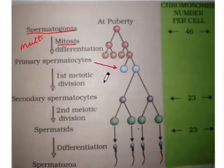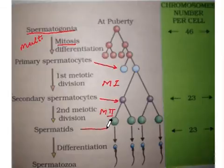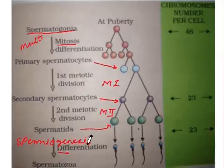Primary spermatocytes undergo meiosis 1 and change into secondary spermatocytes. Secondary spermatocytes then undergo meiosis 2 and form spermatids. Spermatids undergo differentiation — that is spermiogenesis — to form the spermatozoa, or the sperms.